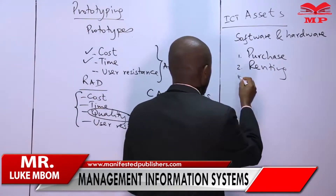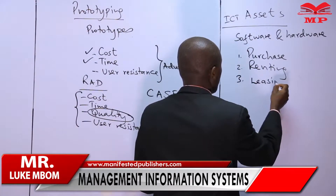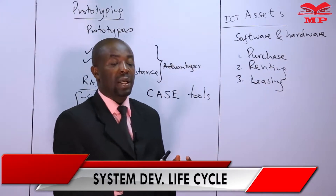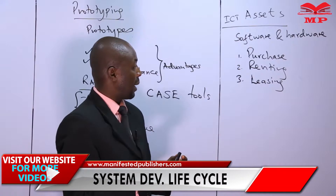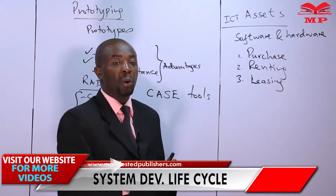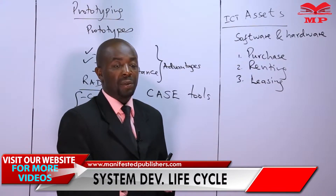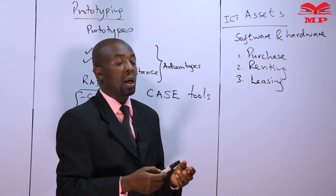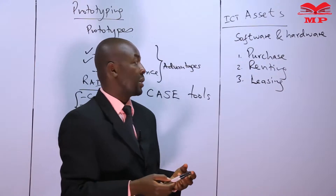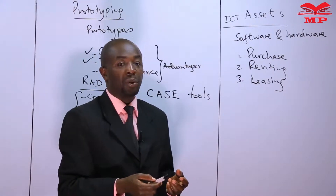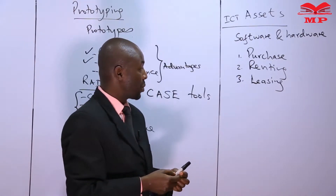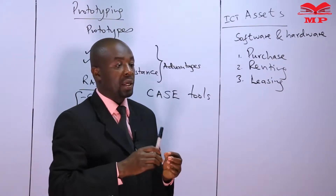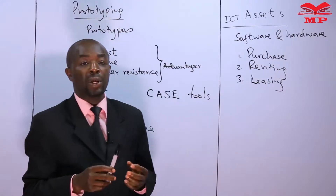Method number three is leasing. In leasing, the organization signs a contract that will allow them to use the hardware and software without limitations. If I sign a lease contract, I can use the hardware and software for any function, like implementing the system or training users. The use of the hardware and software is not restricted, unlike in renting where it is restricted.